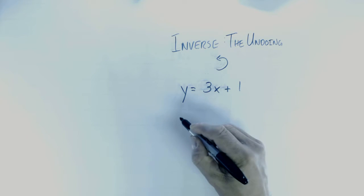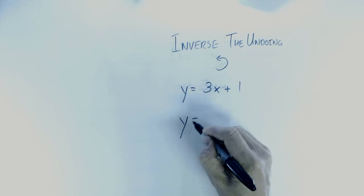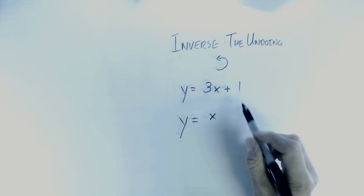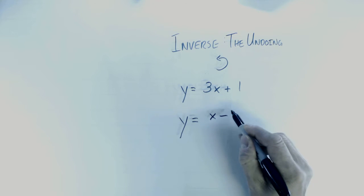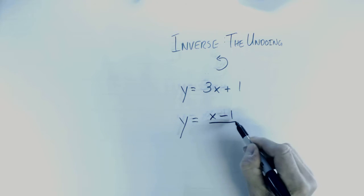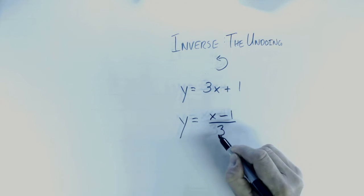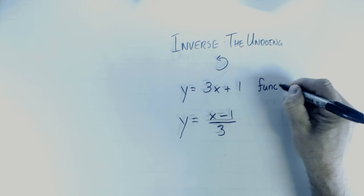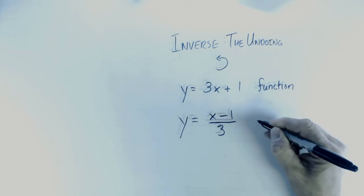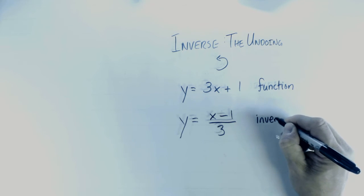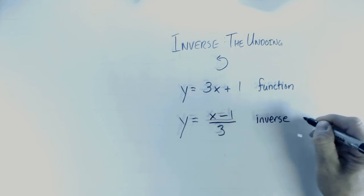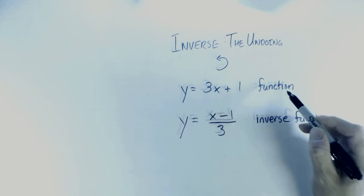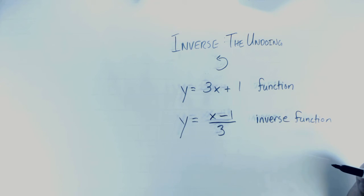Well, here is its evil inverse function. It takes a number and it subtracts 1, and then just to be contrary, it divides by 3. So if this is the function, this is the inverse function. It undoes what the function does. Isn't that frustrating?